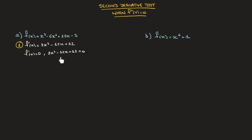In other words we need to solve 3x² - 12x + 12 = 0. To solve this quadratic equation we could use the quadratic formula, but we could also solve it by factoring. Looking at the three terms we can see they each have a common factor of 3, so I can rewrite this as 3(x² - 4x + 4) = 0. This quadratic is in fact a perfect square: x² - 4x + 4 = (x - 2)². So solving reduces to 3(x - 2)² = 0, which has one single solution: x = 2.